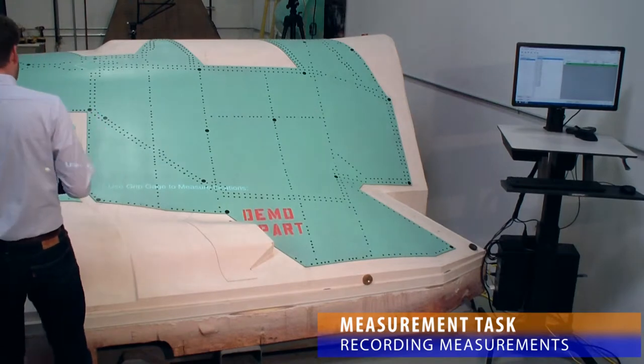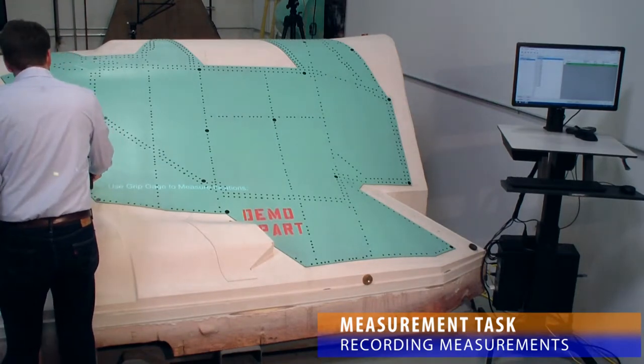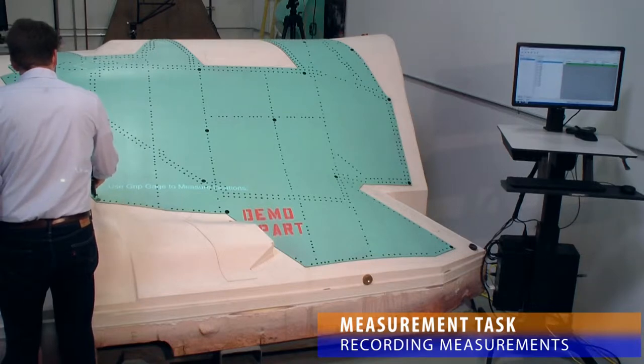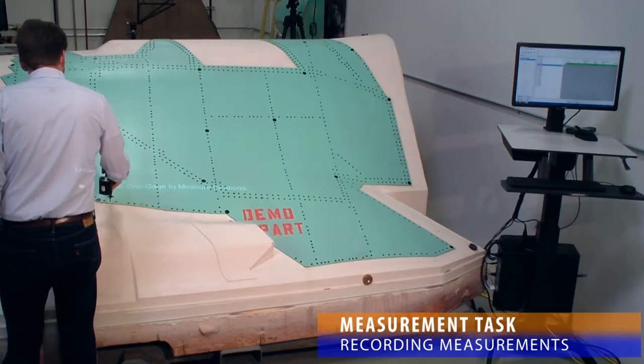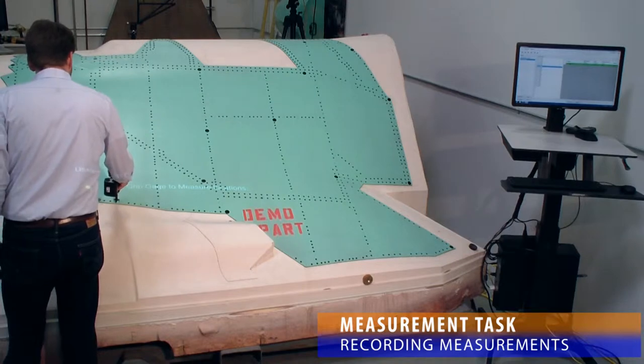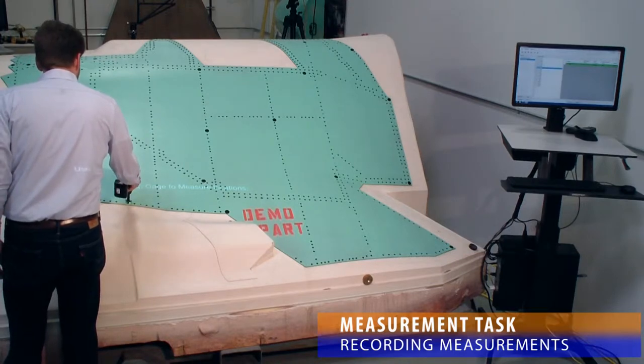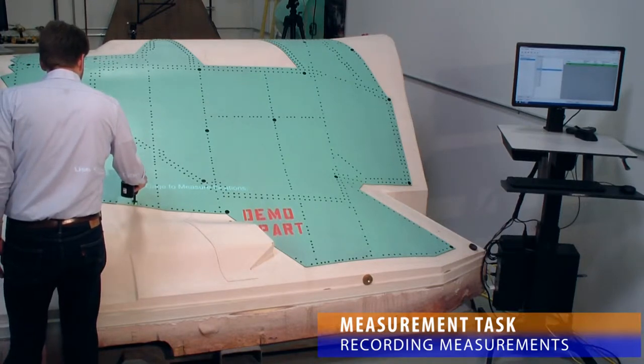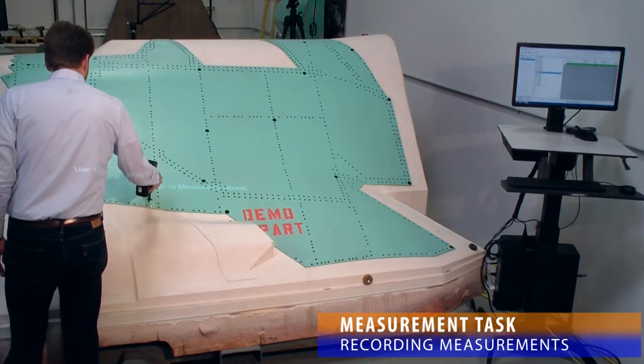Once a device is connected and a measurement task is open in AssemblyWorks operator, the user simply performs measurements as instructed by the projections. At each step of the process, a single location is illuminated. Measurements made while this location is illuminated will be paired with this location for the serial number of the part the measurements are performed on.